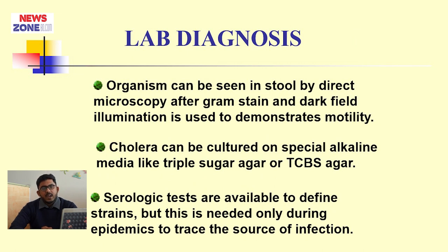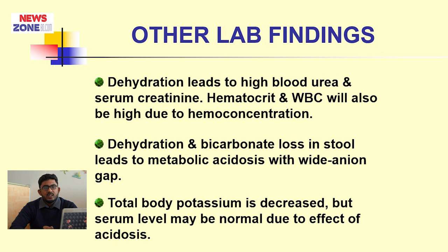Laboratory findings: the organism can be seen in stool by direct microscopy. Gram stain and dark field illumination are used to demonstrate motility. Cholera can be cultured on a special alkaline media known as TCBS (thiosulfate citrate bile salts sucrose) agar. Serologic tests are available to define strains, needed during epidemics to trace the source of infection. Dehydration leads to high blood urea and serum creatinine. Hematocrit and WBC will also be high due to hemoconcentration. Dehydration and bicarbonate loss in stool leads to metabolic acidosis with anion gap. Total body potassium is decreased, but serum level may be normal due to the effect of acidosis.